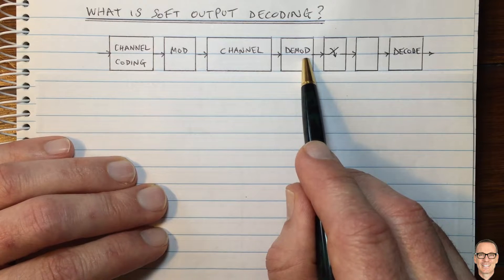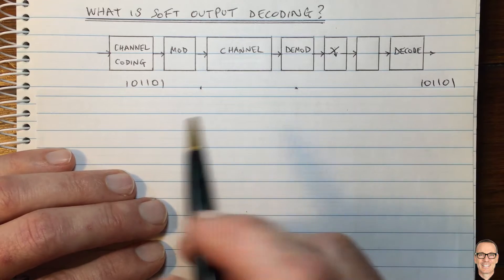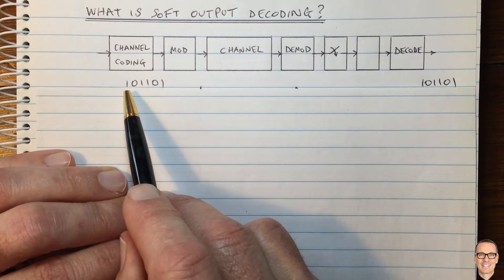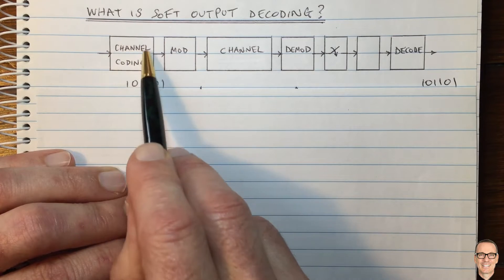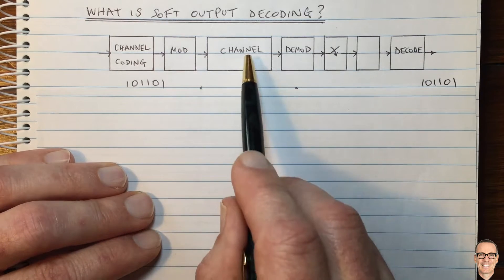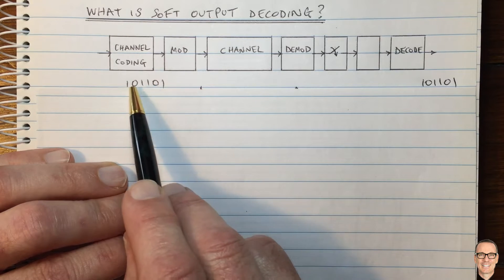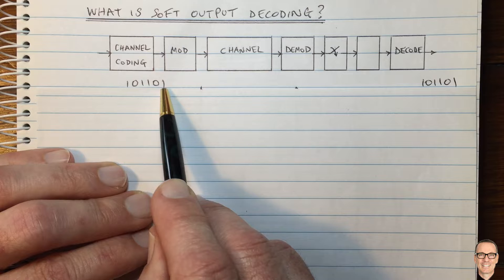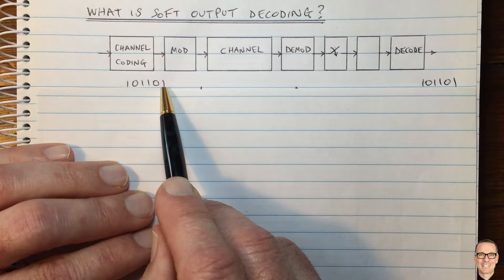Let's think about that in a standard way, starting with a basic block parity check code. Here we are sending five bits and we've done channel coding by adding an extra parity bit to overcome errors. In this case we had three ones in our five bits of data, so we need to add a one on the end so that there's an even number of ones — that's parity coding.